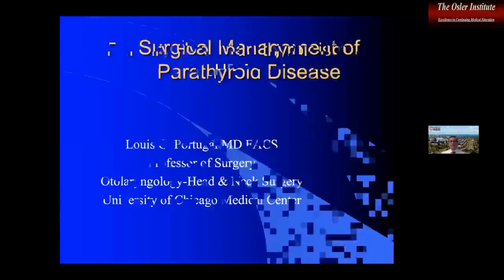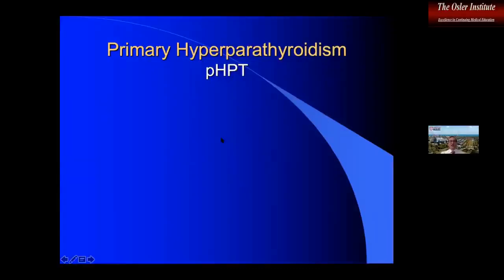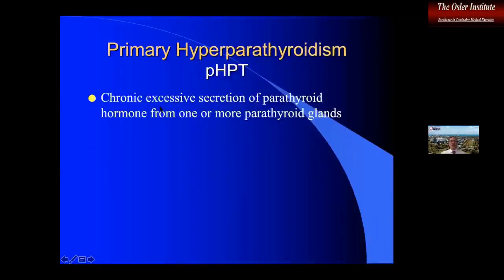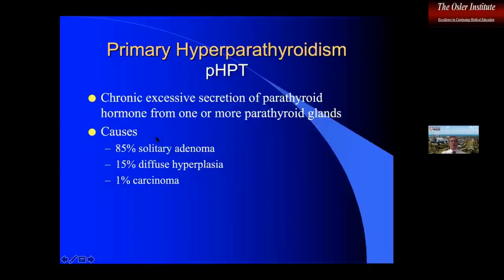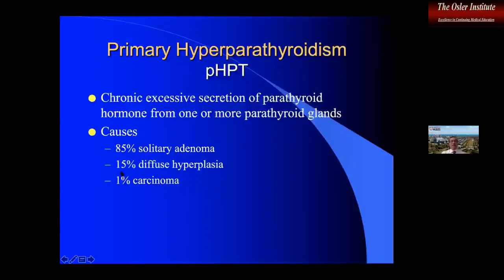Let's go to the diagnosis. We know that this is a chemical serologic diagnosis with chronic excessive secretion of parathyroid hormone from one or more parathyroid glands, caused most commonly by a solitary adenoma, and then 15% by a diffuse four-gland hyperplasia or carcinoma rarely. For carcinoma, this has the very distinct feature of markedly high PTHs in the thousands, high hundreds, and aggressive disease because they're not within an anatomic contained area, and therefore high local recurrence.